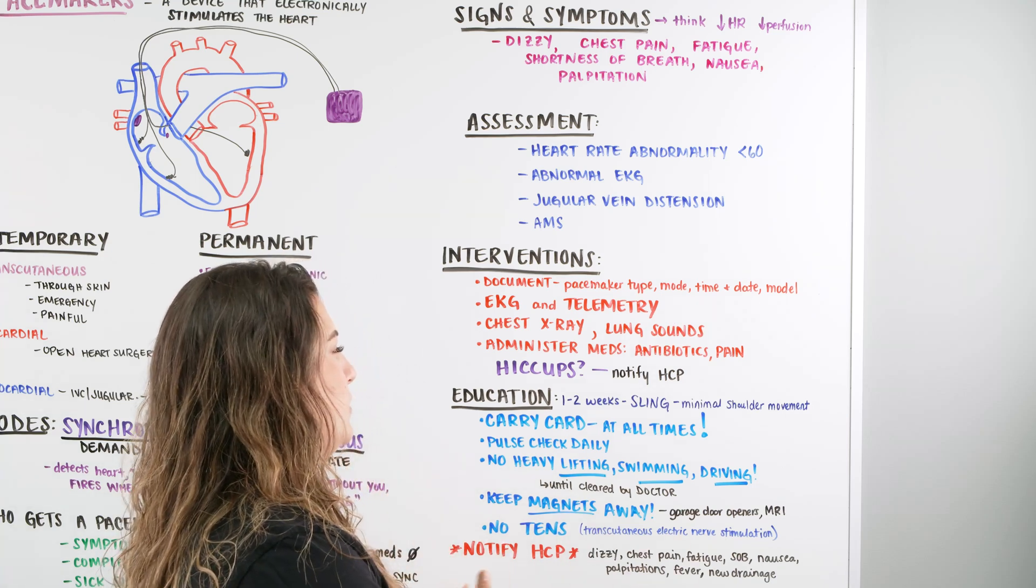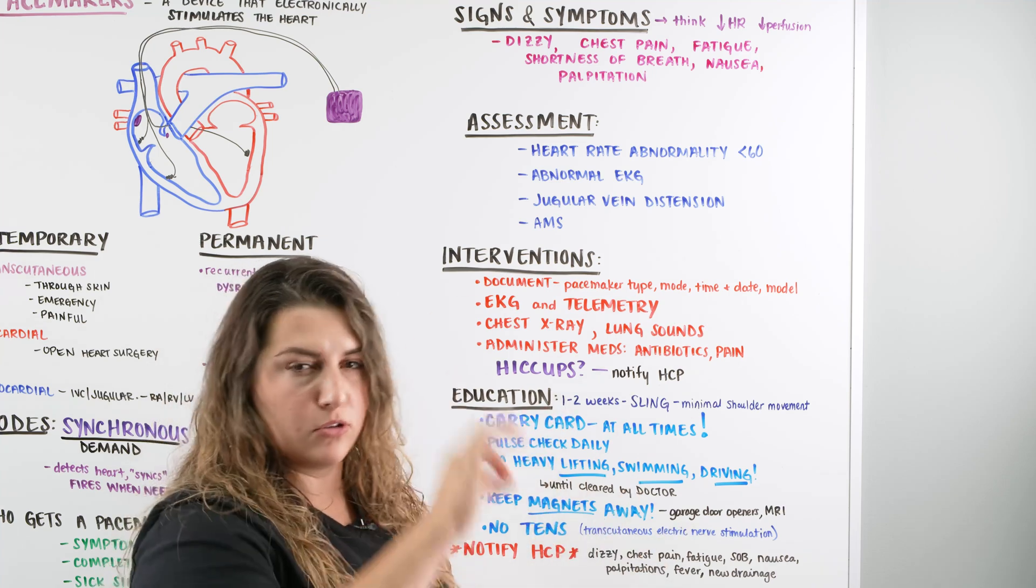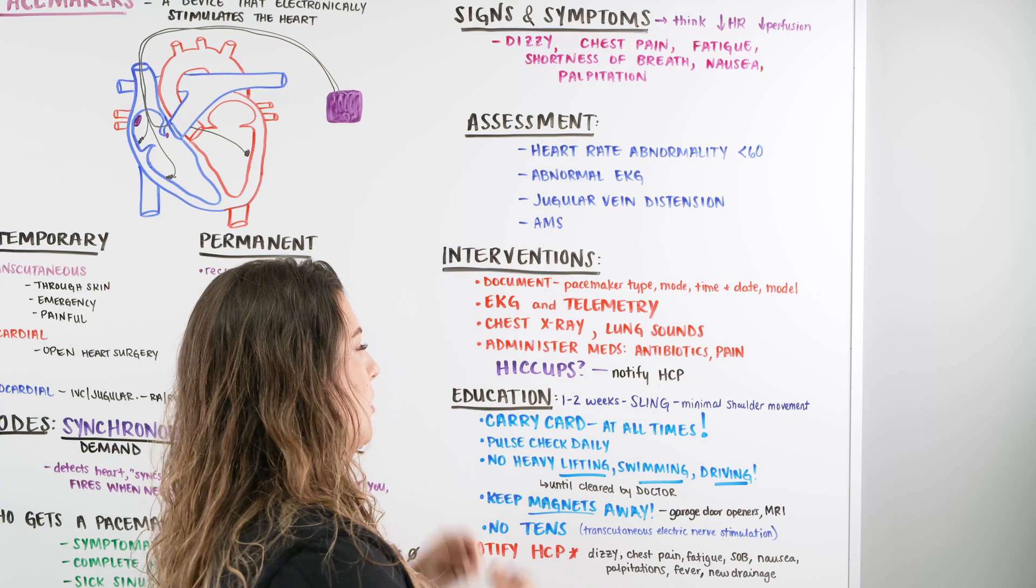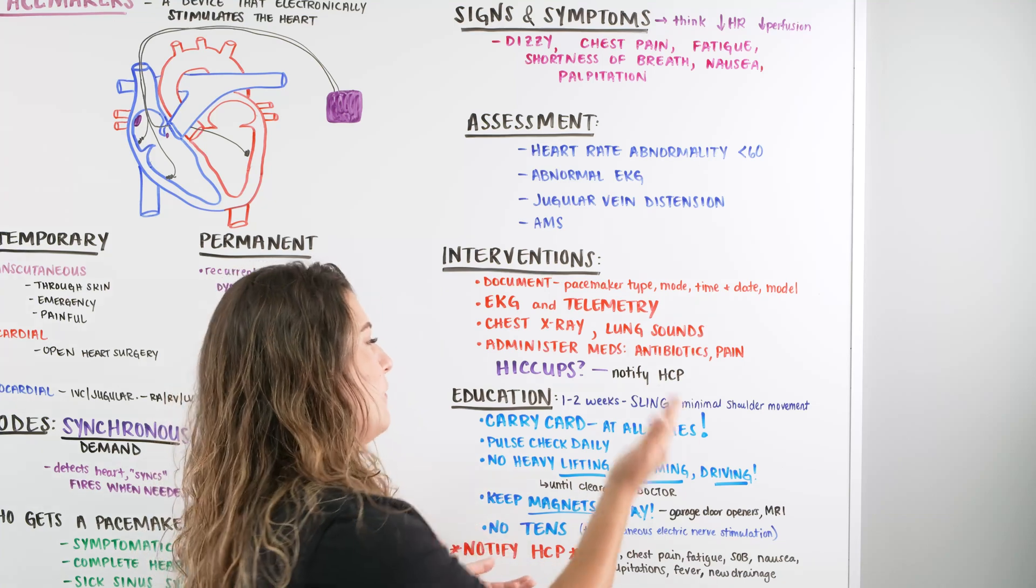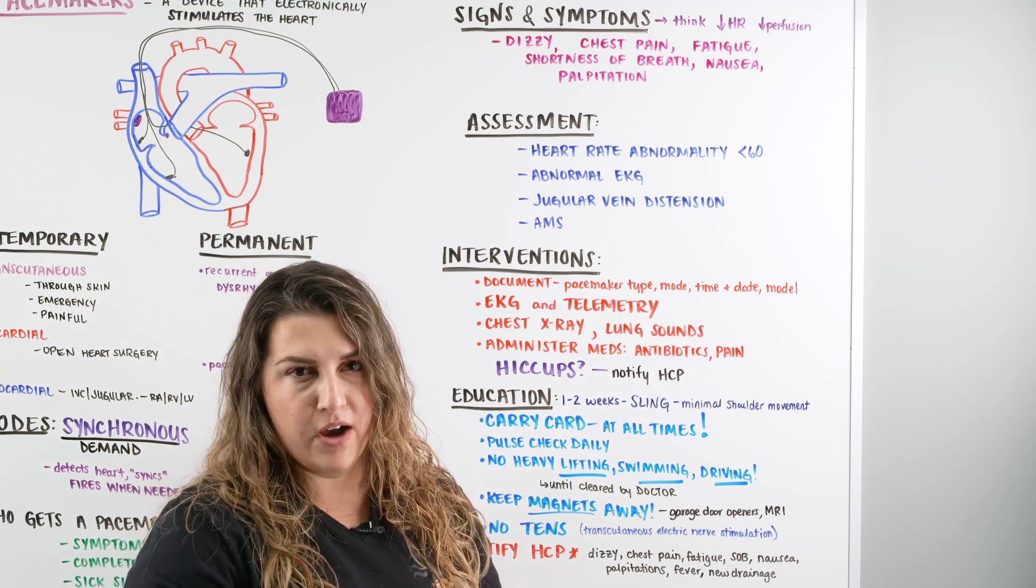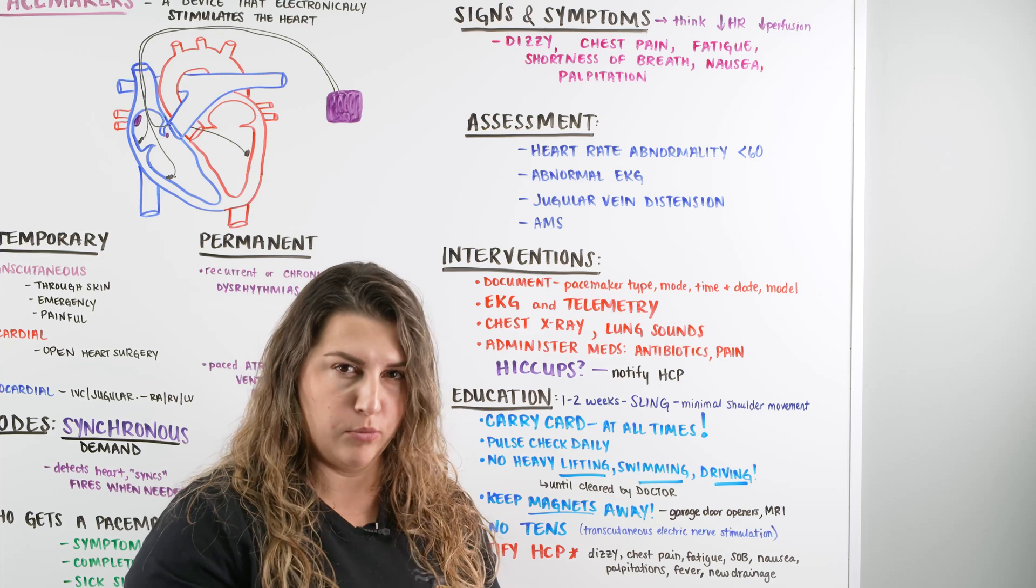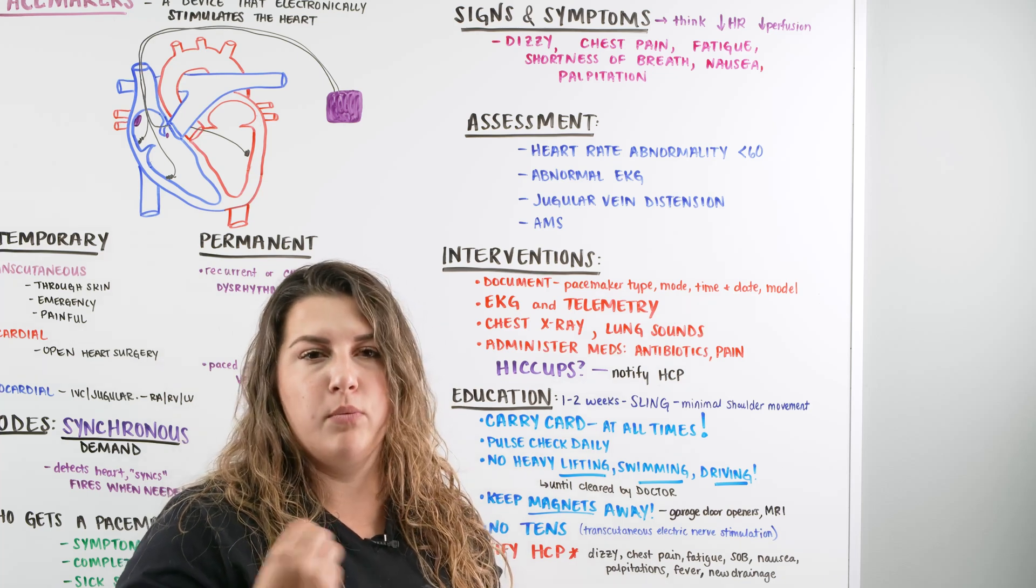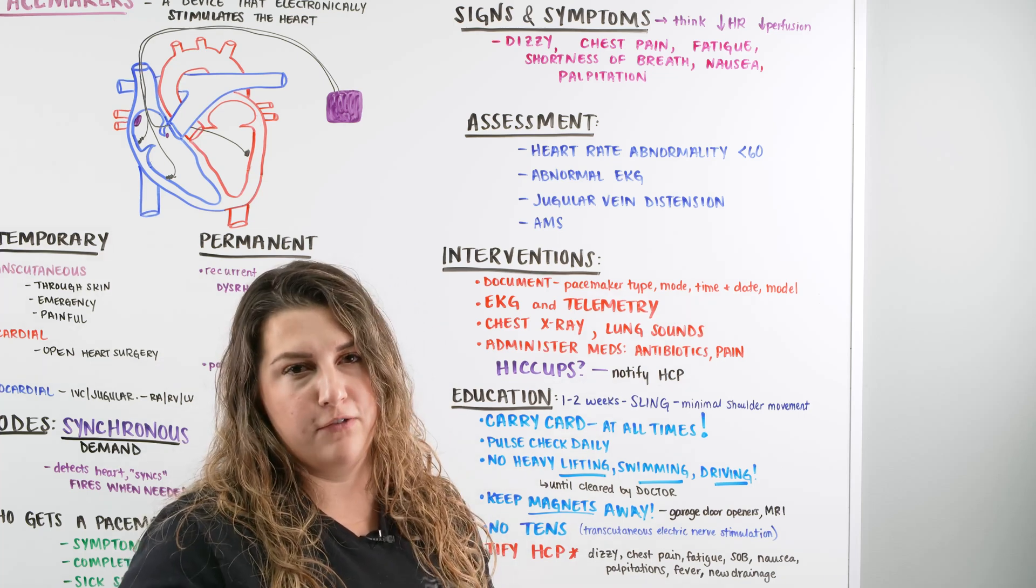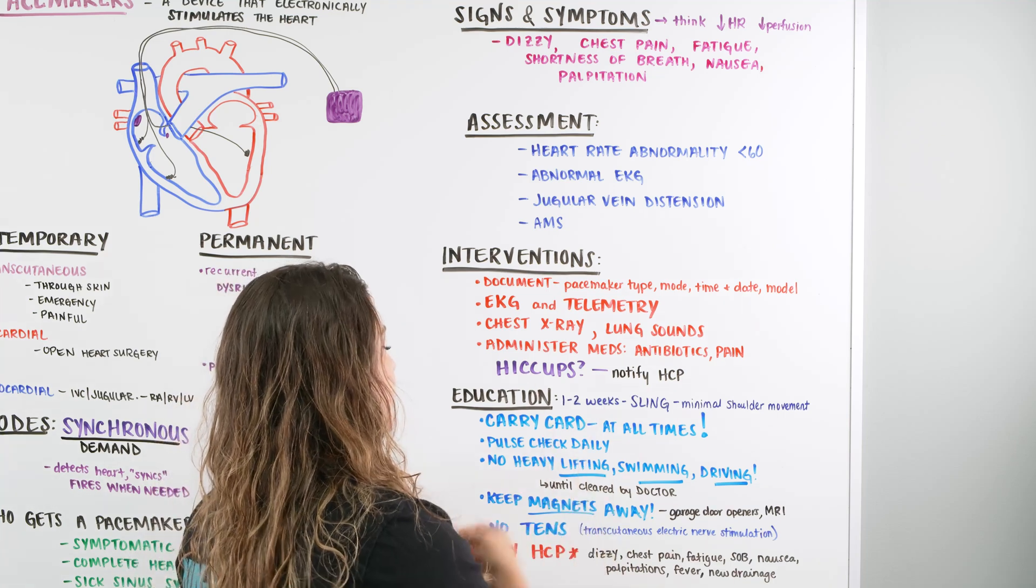The biggest thing with these patients is we want to make sure they aren't developing any signs that the leads are dislodged, those little leads going into the chambers of the heart are in places they shouldn't be. For example, if the patient has hiccups, we want to make sure we are telling their health care provider, whether they tell their health care provider or we do when they are still in the hospital recovering, because this is a sign that one of those leads potentially could be on the diaphragm and it's causing that hiccuping motion. We want to make sure we let them know about that.